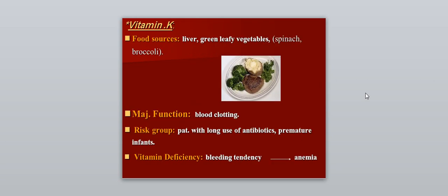Vitamin K. Food sources include liver, green leafy vegetables, spinach, and broccoli. The major function is blood clotting. The risk group includes patients on long-term antibiotic use and premature infants, who are more likely to have vitamin K deficiency and may develop hemorrhagic disease of the newborn. Vitamin K deficiency causes bleeding tendency and may end with anemia.